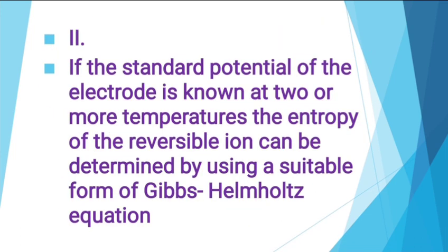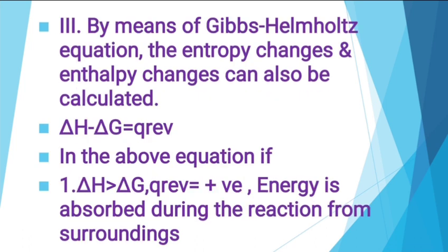Secondly, if the standard potential of the electrode is known at two or more temperatures, the entropy of the reversible ion can be determined by using a suitable form of the Gibbs-Helmholtz equation. The third application of the Gibbs-Helmholtz equation is that we can calculate entropy changes and enthalpy changes from it. The equation is: delta H minus delta G is equal to Q_reversible, or equivalently, delta H is equal to delta G plus Q_reversible.